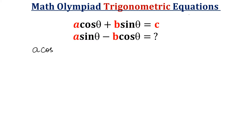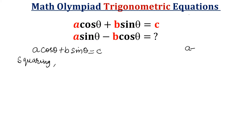So I will write a cosθ plus b sinθ is equal to c. Now take a square on both sides — do squaring. Once you square both sides, the (a + b)² formula will come into the picture. The formula is a² plus b² plus twice ab.